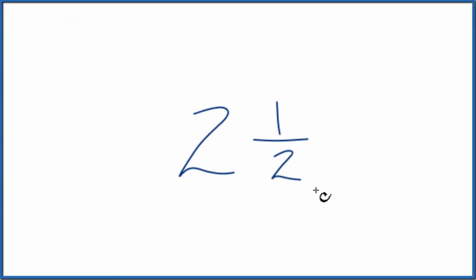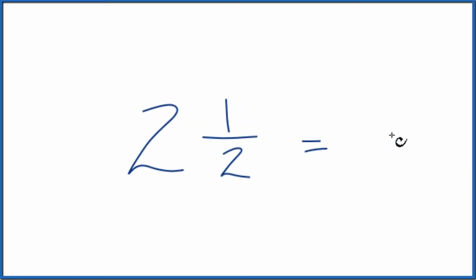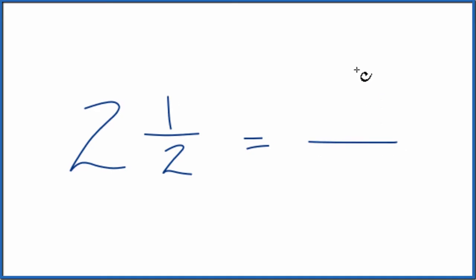Let's write 2 and 1 half as an improper fraction. Right now we have this mixed number here. When we have an improper fraction, the numerator — the number on top — is larger than the number on the bottom, the denominator.